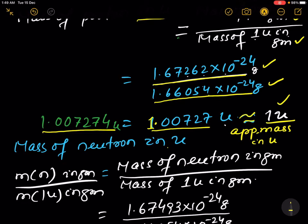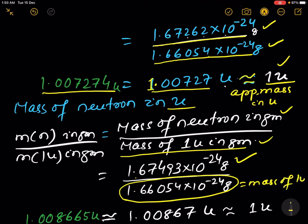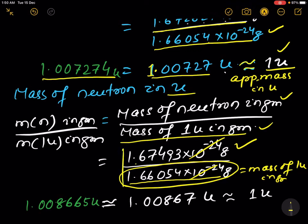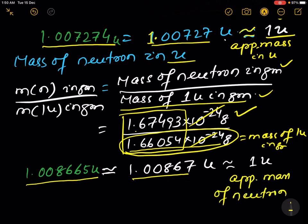Similarly, mass of neutron in u equals mass of neutron in grams divided by mass of 1 u in grams. Mass of neutron is 1.67493 × 10⁻²⁴ grams divided by 1.66054 × 10⁻²⁴ grams — the 10⁻²⁴ cancels — giving 1.008665 u, or approximately 1.00867 u. The approximate mass of the neutron is 1 u.